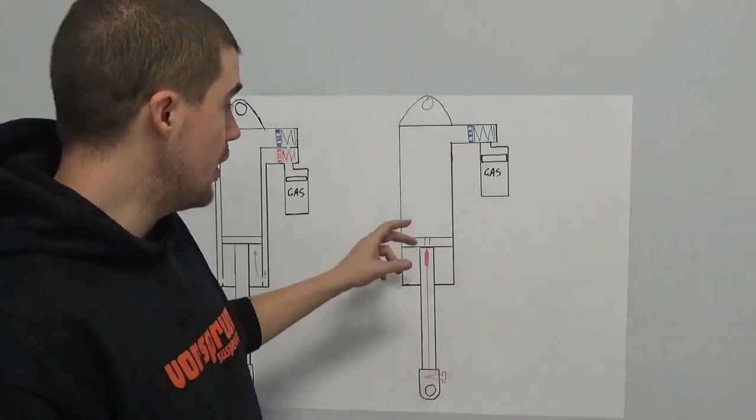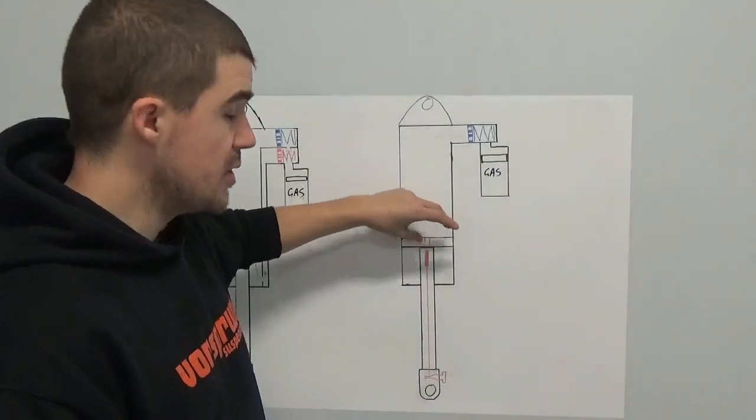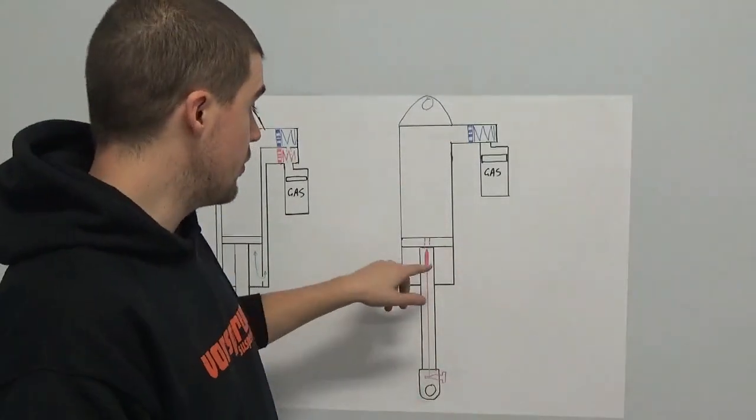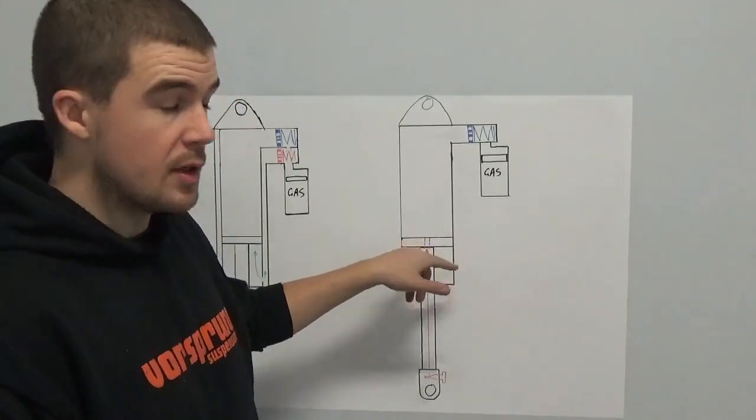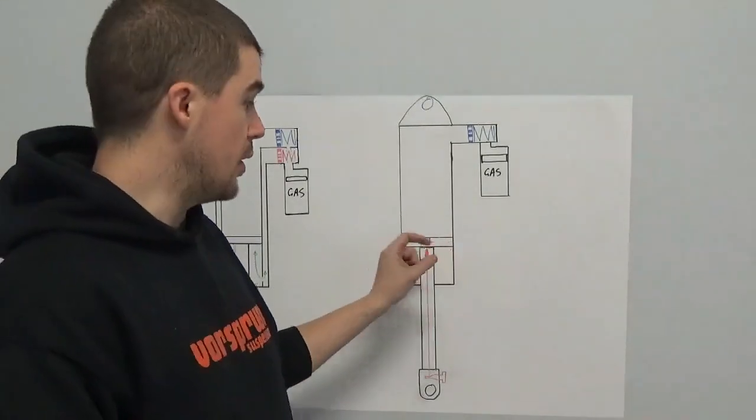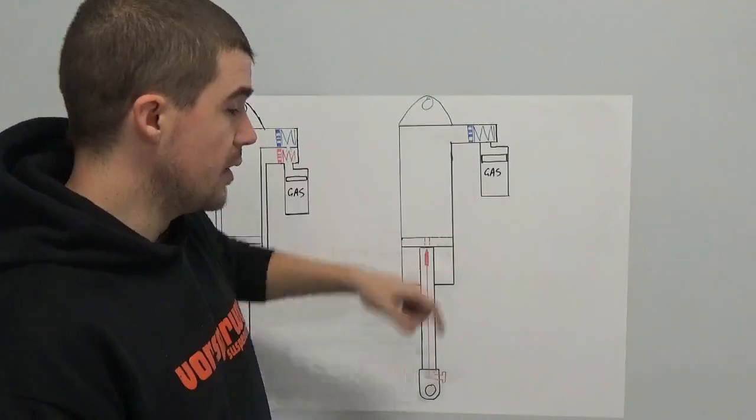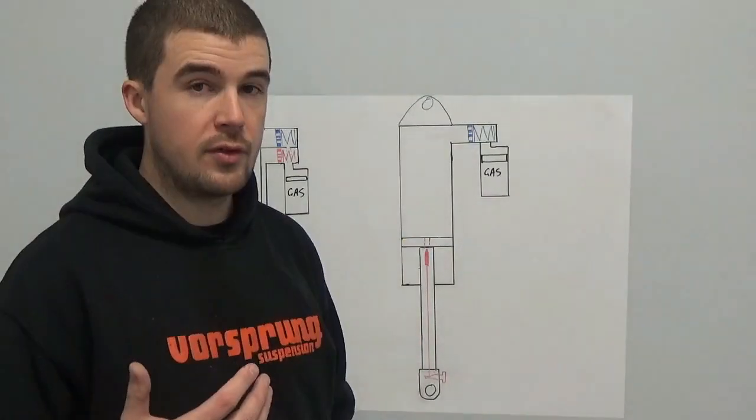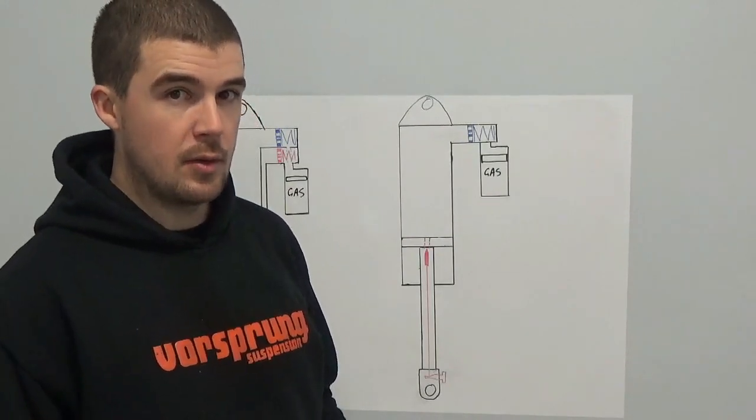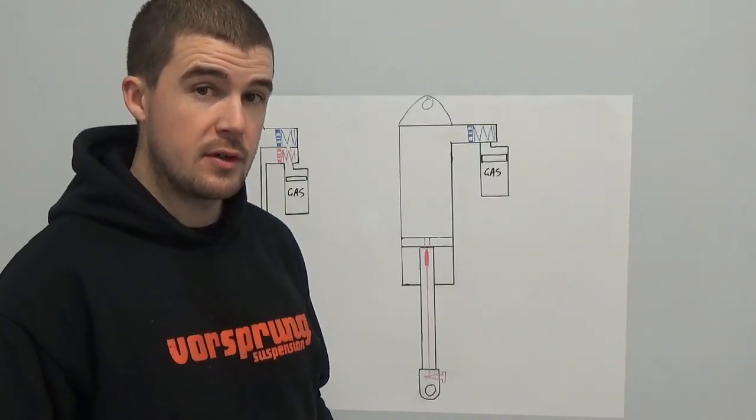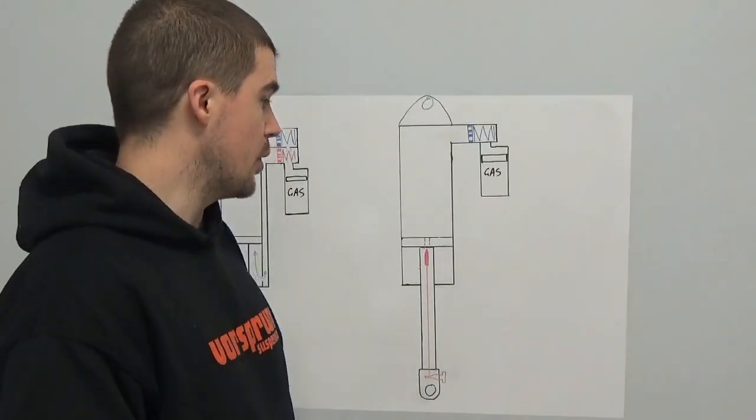What we'll typically have is the majority of the damping force being generated over the main piston here. The reason for this is that the surface area in here is larger than the surface area of the shaft. Force is equal to pressure times area. The easiest way to get a bigger force when we're dealing with pressures is to increase the area rather than the pressure.